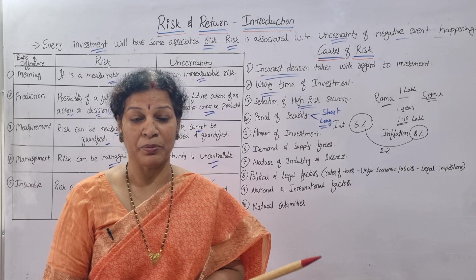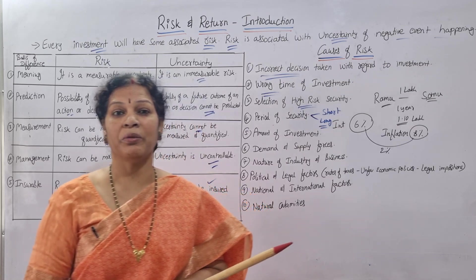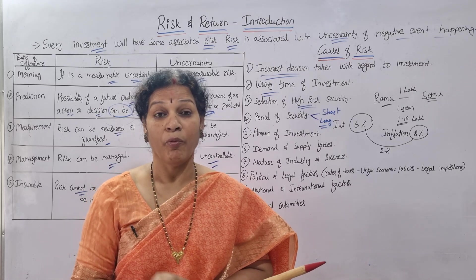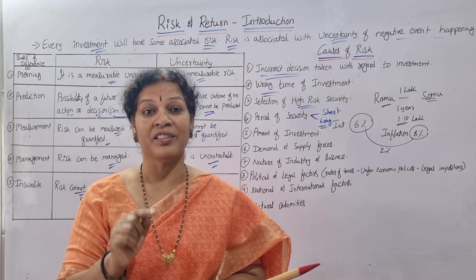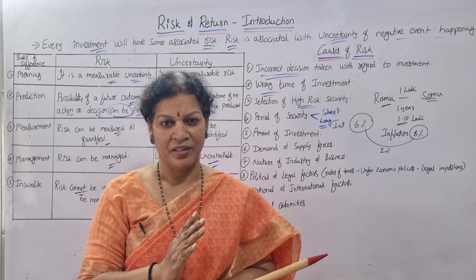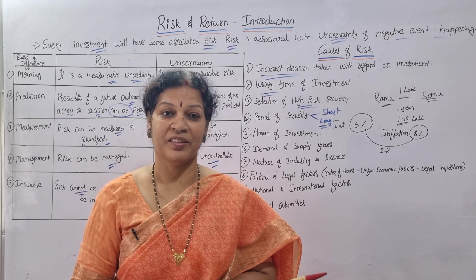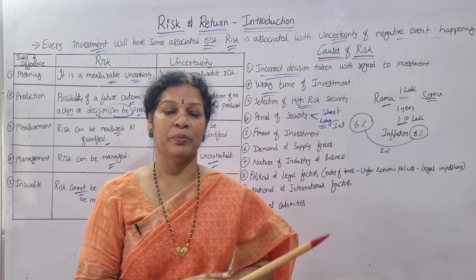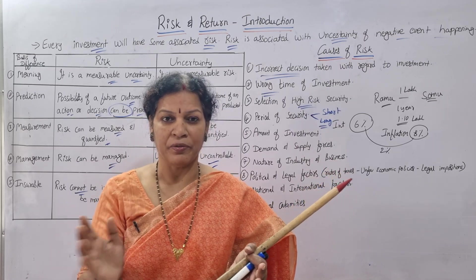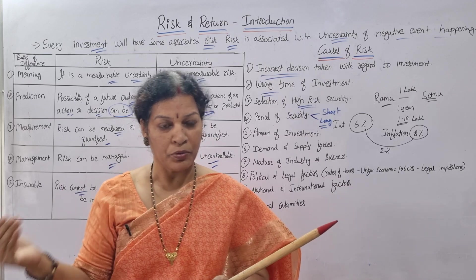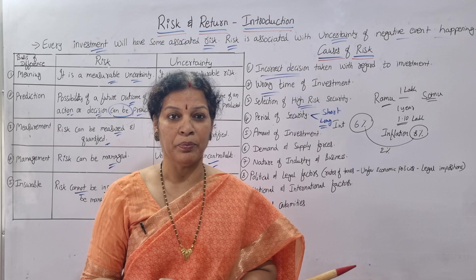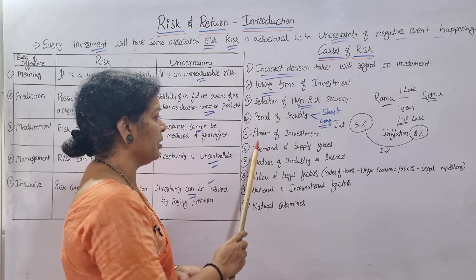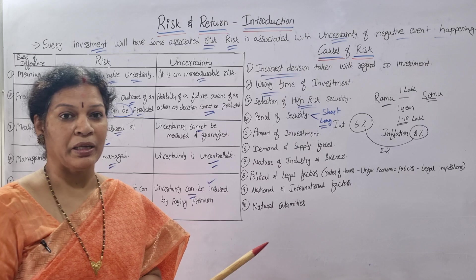Rather than keeping one crore in a single investment, segregate it — for example: 20 lakh in mutual funds, 20 lakh in securities, 20 lakh in debentures, and 40 lakh in bank or post office deposits. When you segregate your investment across different avenues, the risk comes down significantly. So the amount of investment and how you spread it matters greatly.